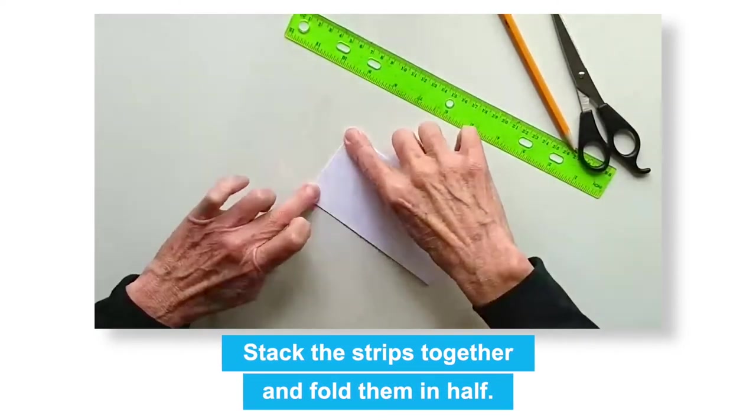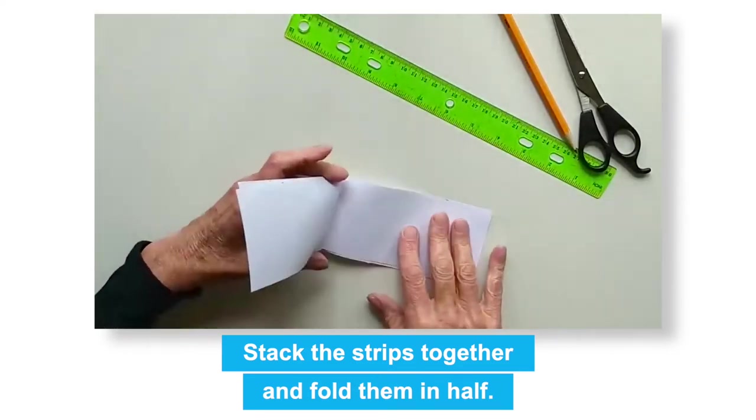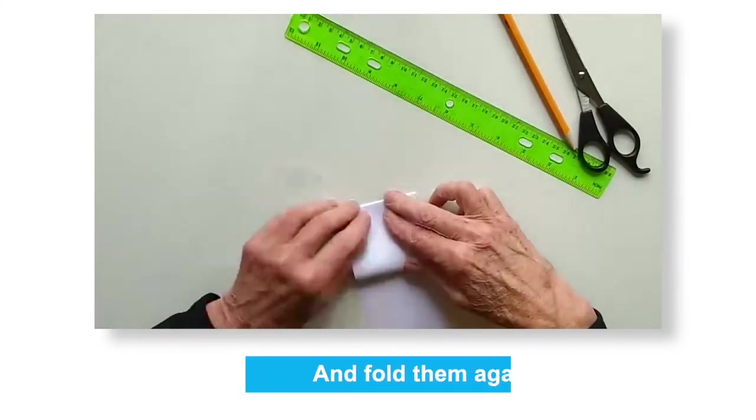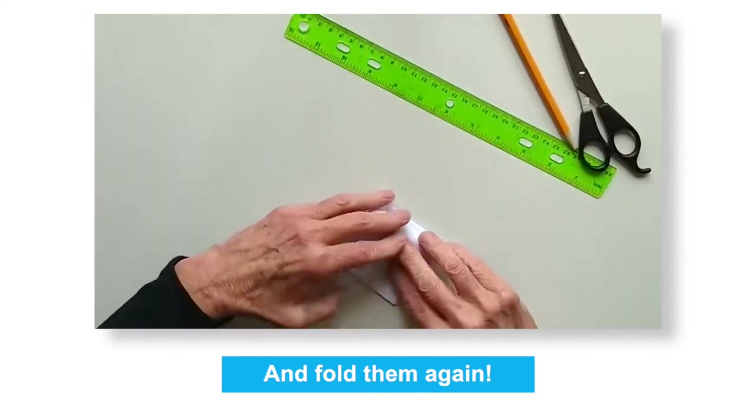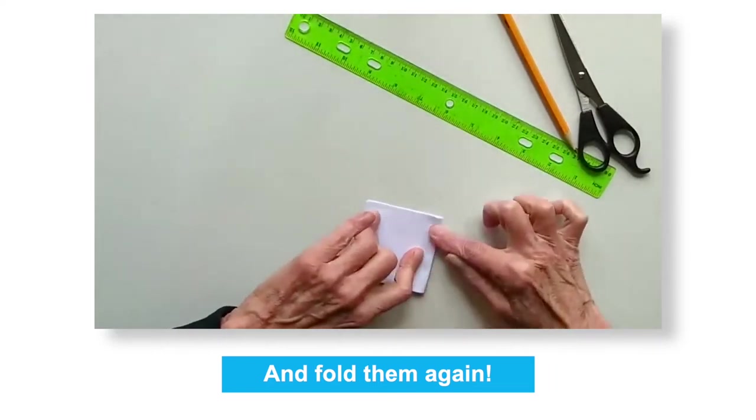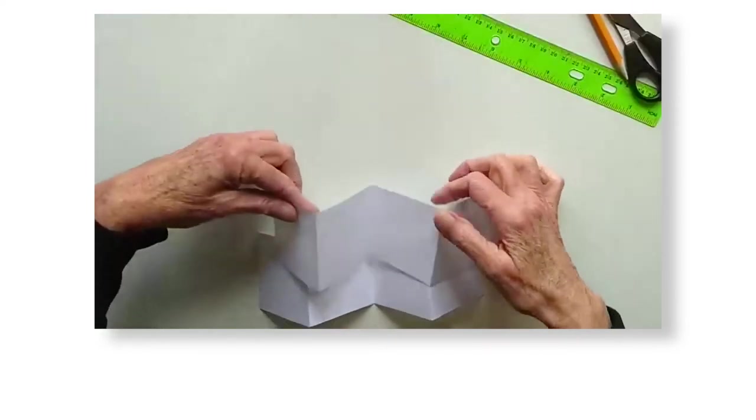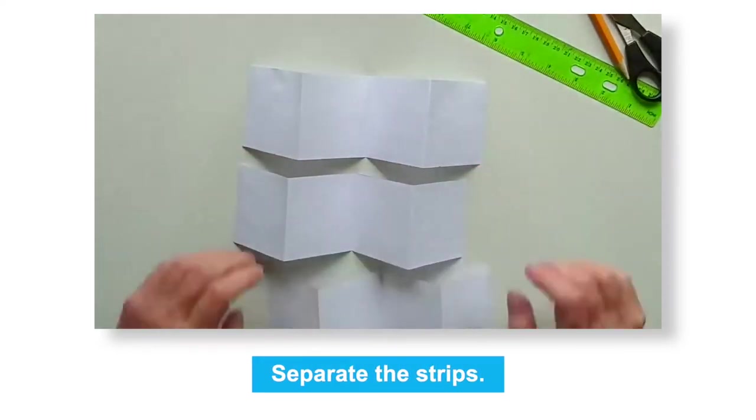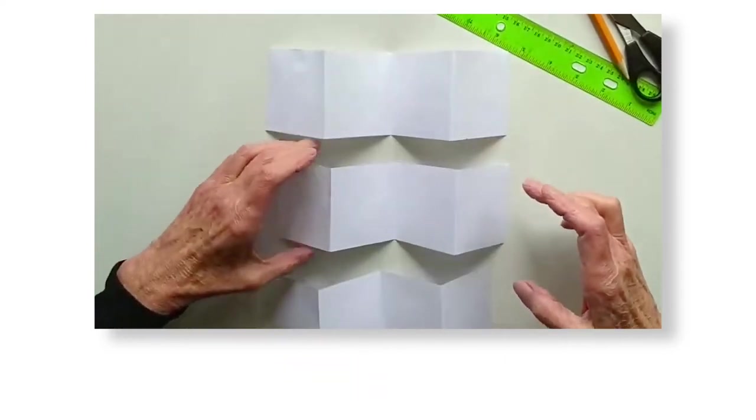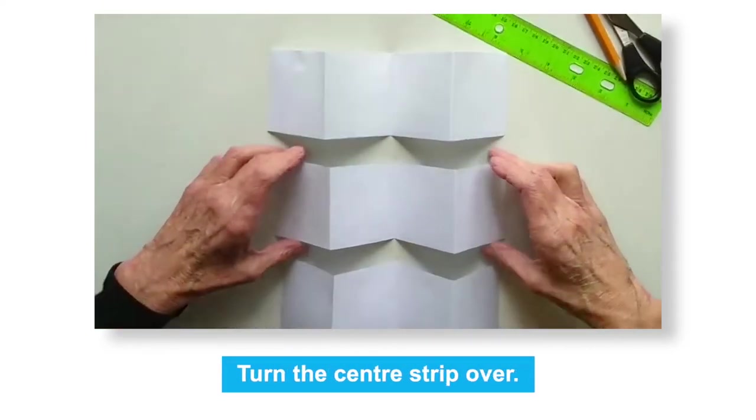Now, stack the three strips of paper together and fold them in half and then in half again as I'm doing. Separate the three strips and place them one above the other. Turn the center strip over.